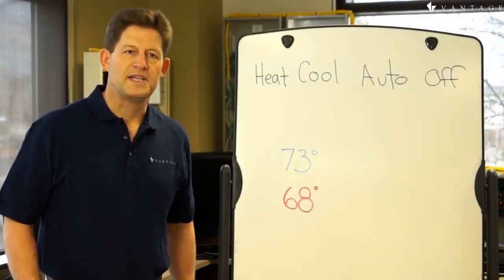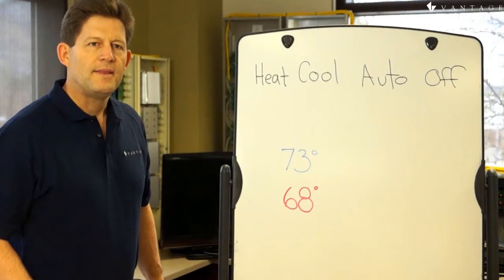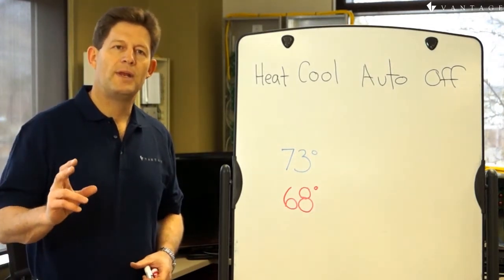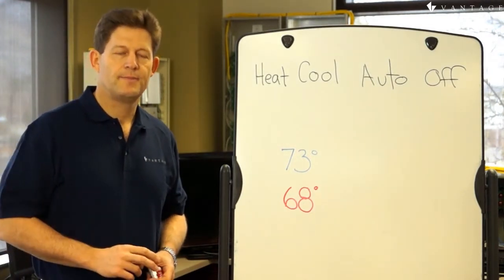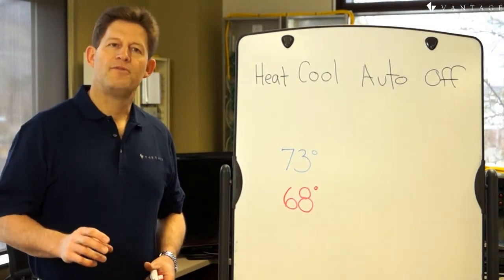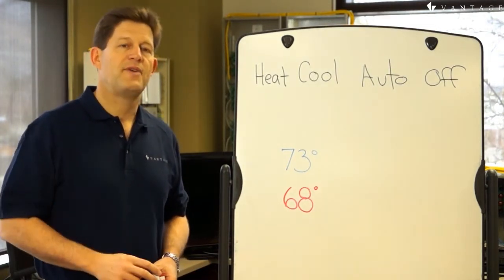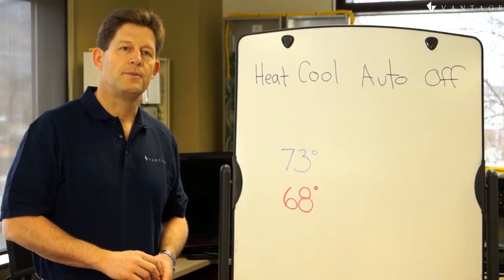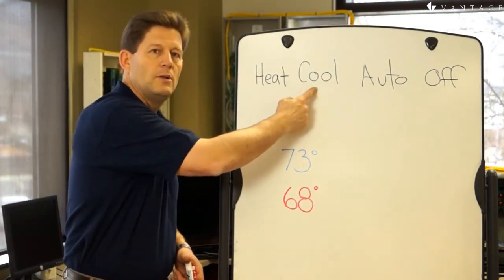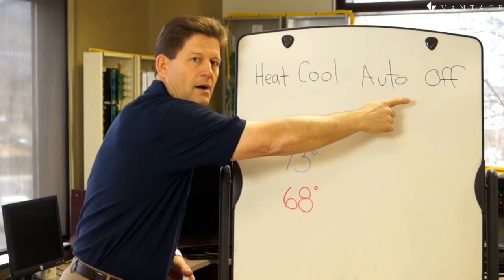Let's talk about operation modes, and then we'll give some practical examples of setting mode and set points. Simply stated, an operation mode defines what the thermostat can signal the HVAC system to do. The four modes are heat, cool, auto, and off.